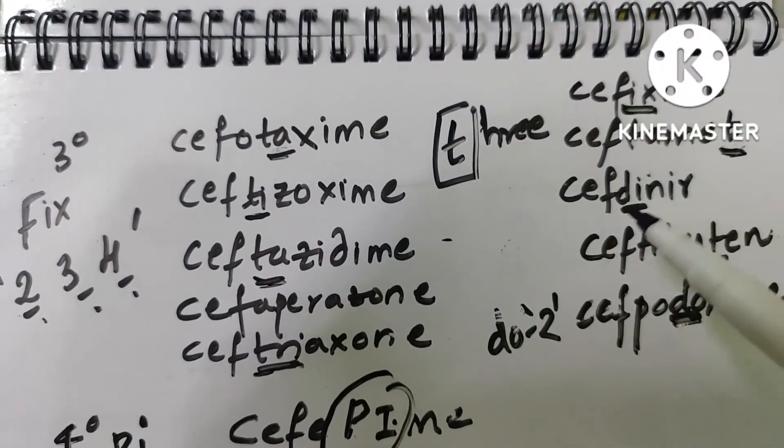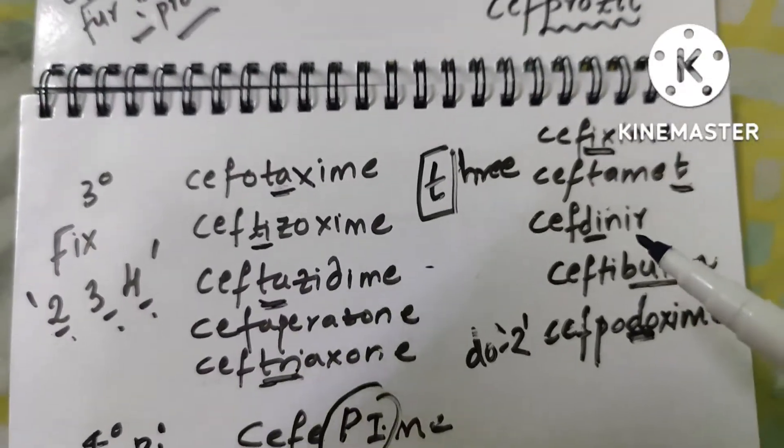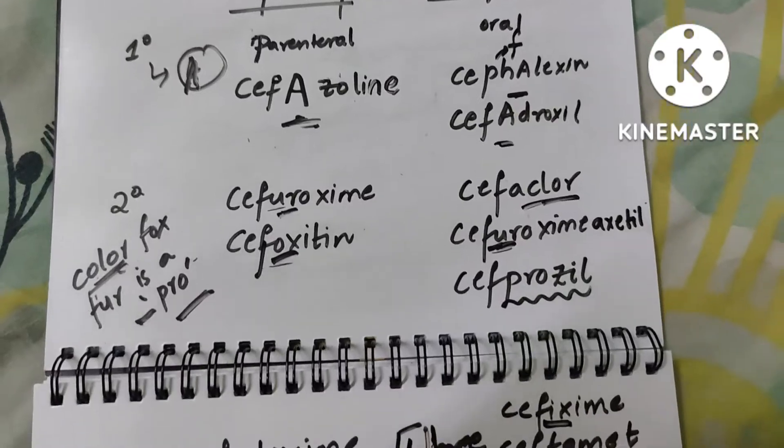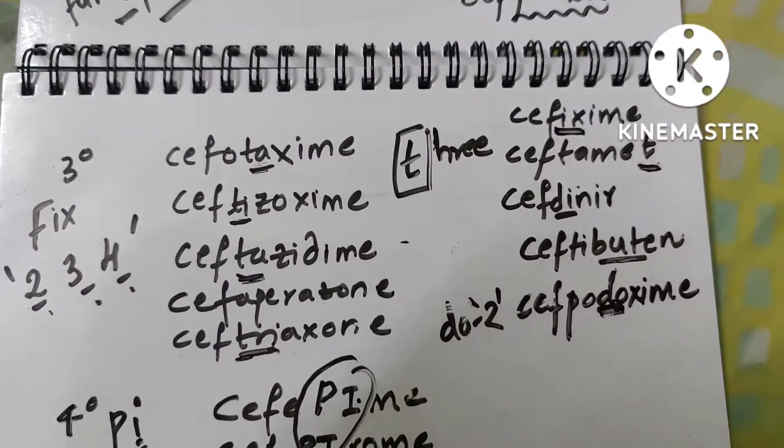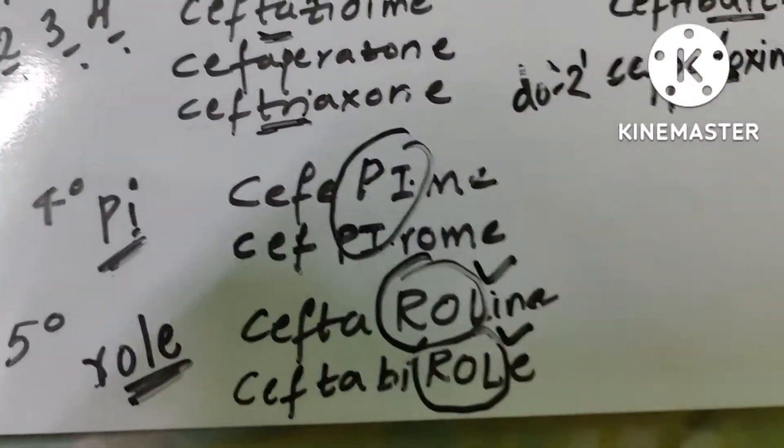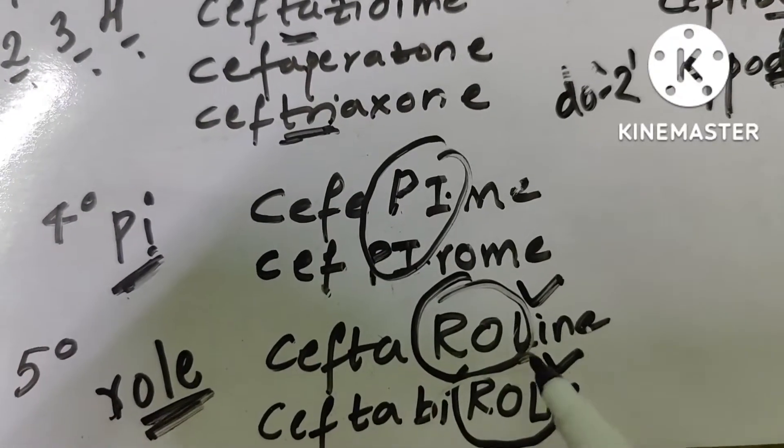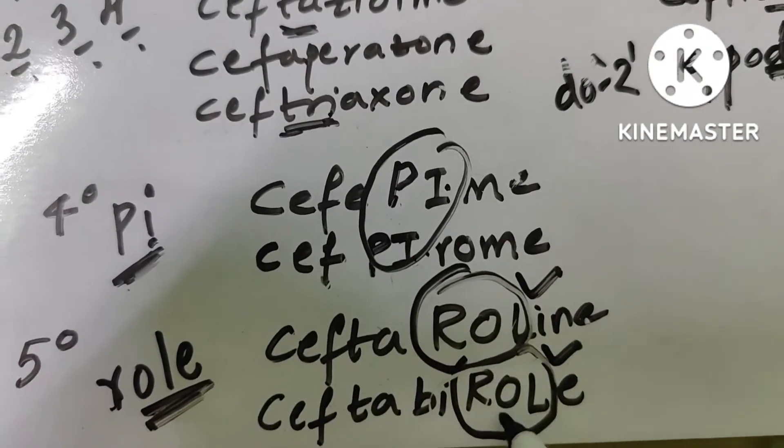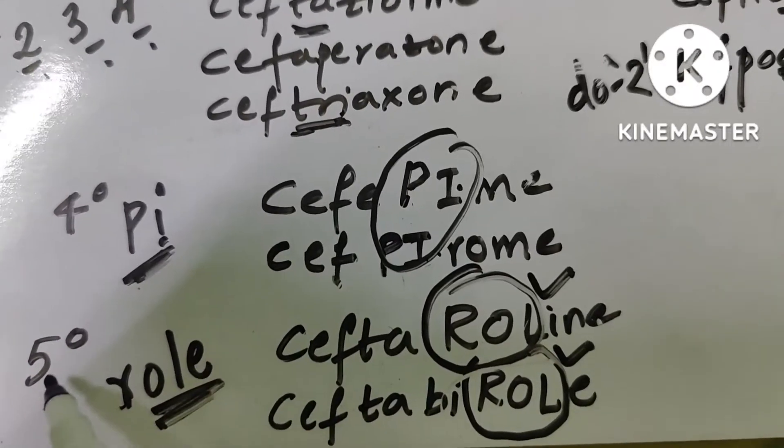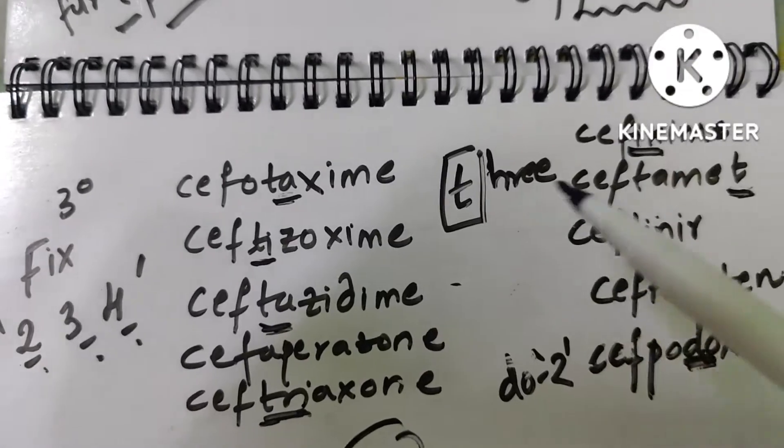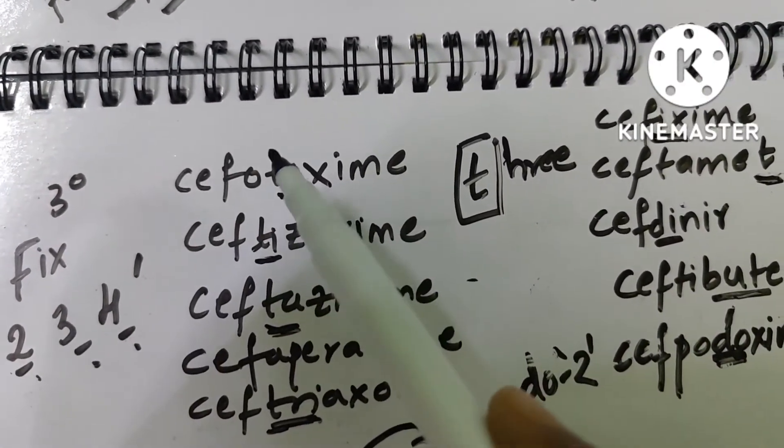Ceftriaxone also has 't', ceftizoxime has 't', ceftibuten has 't'. In the whole generations, you don't have 't' anywhere except for the third generation. But here is an exception: in the fifth generation you find 't' - cefta-, cefta- - but don't confuse with this 't' because you already have 'role' in it. So you found 'role' in the name, so you take it for fifth generation only. Don't confuse it with the 't' of third generation. 'T' is the mnemonic here.